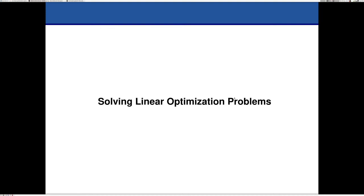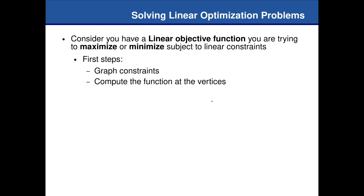Welcome back. Now we start solving linear optimization problems. The basic idea is to come up with solutions for linear optimization problems. Let's start by discussing how to graph constraints and how to compute the solution through the vertices of those constraints. Whenever we have a linear objective function and linear constraints — whether it's a maximization or minimization problem — try to graph the constraints and solve it using the vertices.